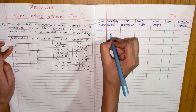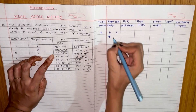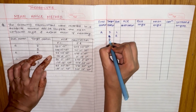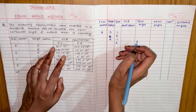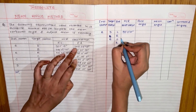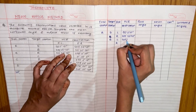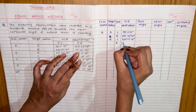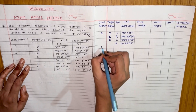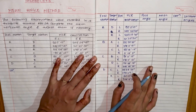When the instrument station is A, the target stations are D and B. For face left and face right: the HCR observation for D, face left is 90°0'10" and face right is 269°59'40". For B, face left is 200°25'40" and face right is 20°25'30". Similarly, all the HCR observations for the other stations are written in the table.